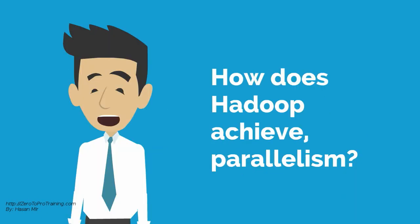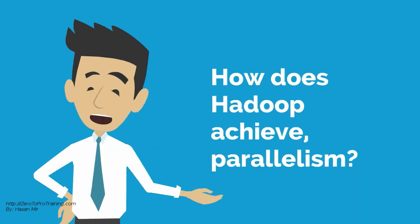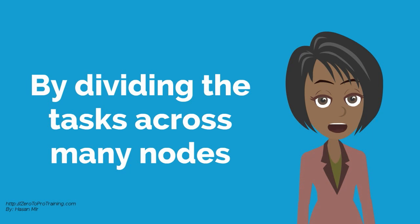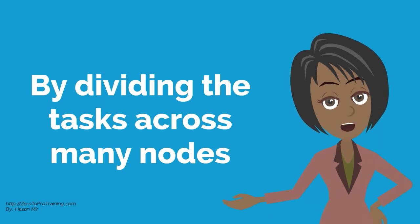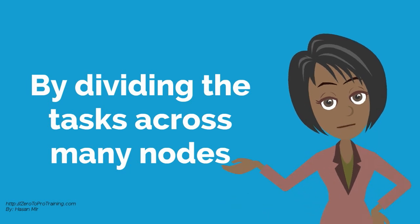How does Hadoop achieve parallelism? The parallelism is achieved by dividing the tasks across many nodes.